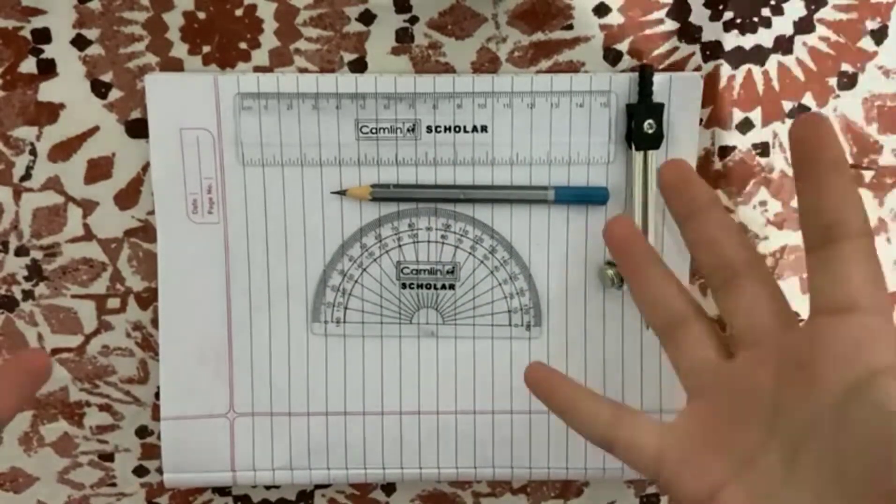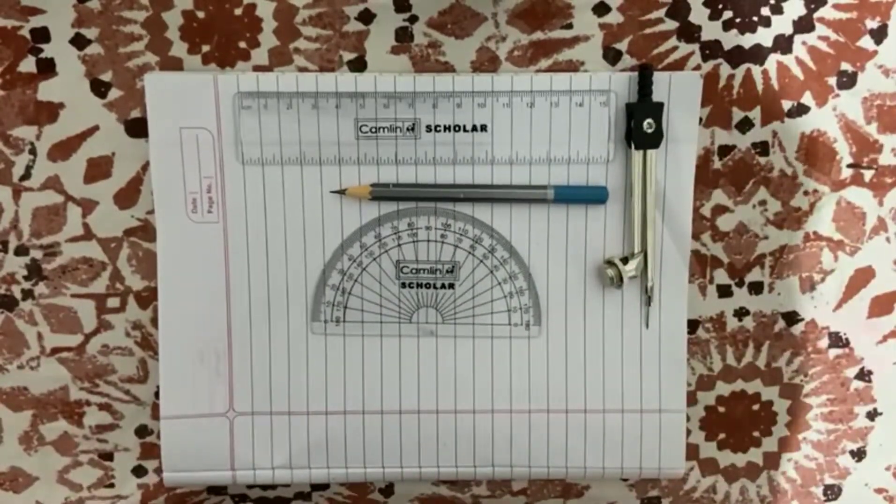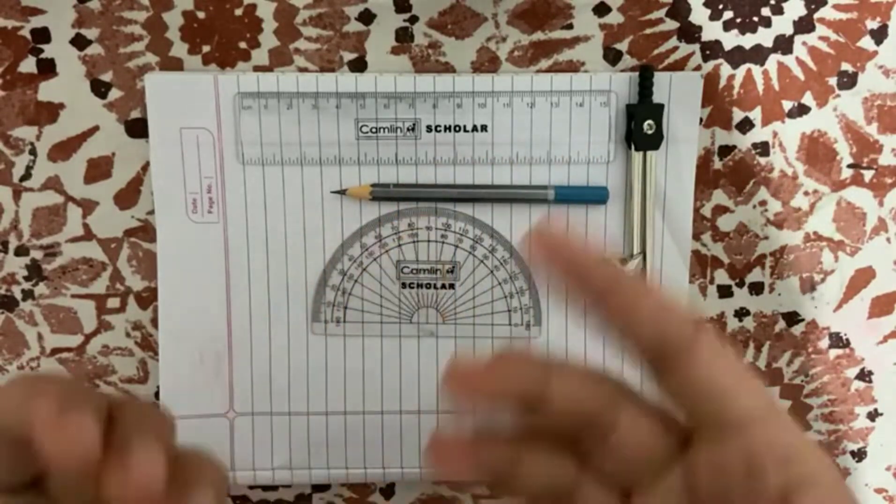Hey everyone and welcome back to my channel. Today I will be telling you how to make a 50 degree angle using compass and ruler. So let's get started.